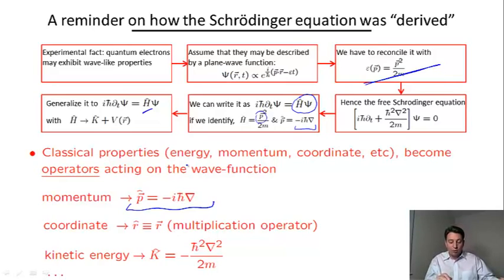We also introduce the potential energy which enters this Ĥ. In this setup the potential energy naturally appears as just a multiplication operator. We can think about a coordinate operator, a multiplication operator that simply multiplies the wave function.